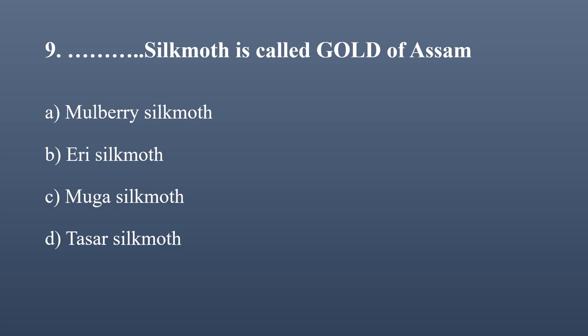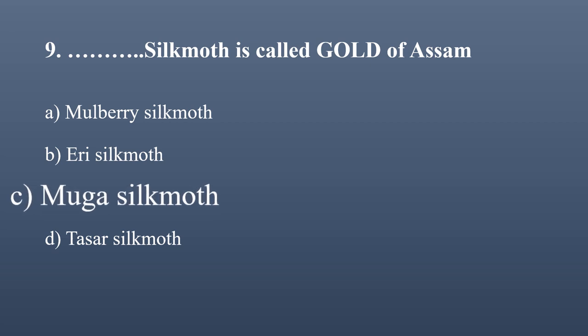Which silk moth is called 'Gold of Assam'? Options: mulberry silk moth, Eri silk moth, Muga silk moth, Tassar silk moth. In Assam, most silk comes from the Muga silk moth. The correct option is Muga silk moth — it is called the Gold of Assam.